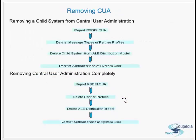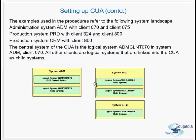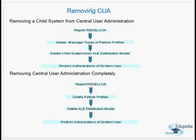Moving on to removing CUA. To remove a child system from a central user administration, you run the report RSTELE_CUA. You delete the message types of the partner profiles, delete the child system from the ALE distribution model, and restrict authorizations of the system user.